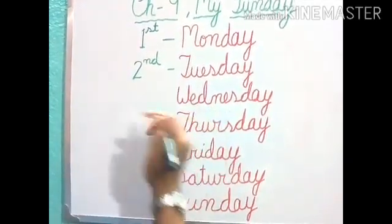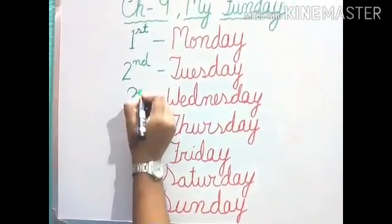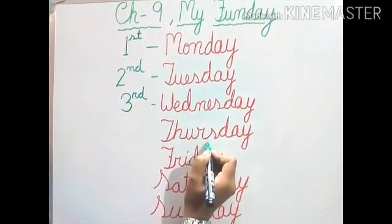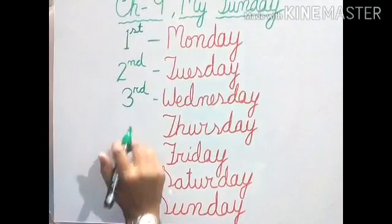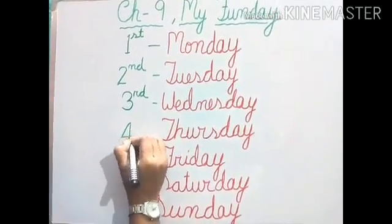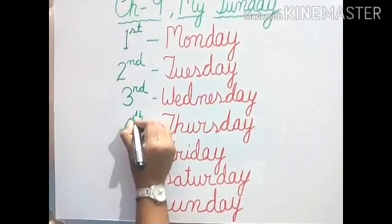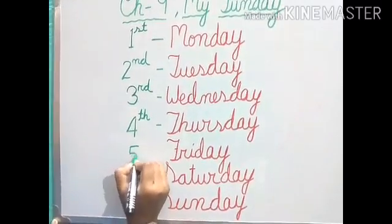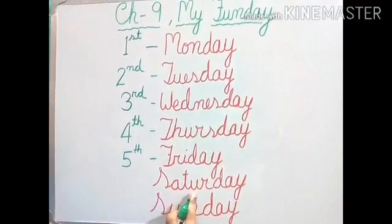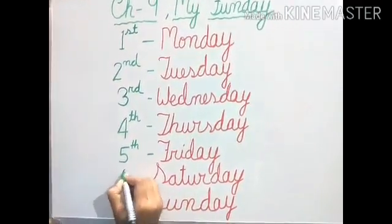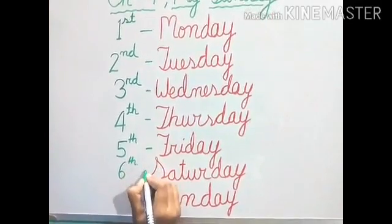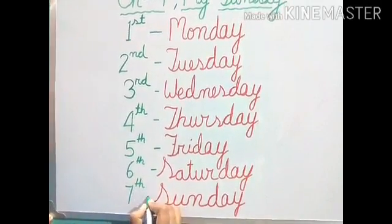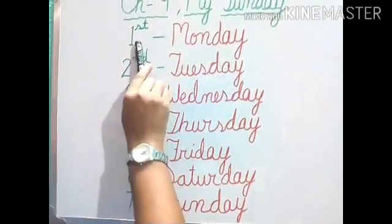Then Wednesday. Wednesday is the third day of the week. Then Thursday — that is after the third day. Which day will come? Fourth day. So Thursday will be the fourth day of the week. And Friday will be the fifth day of the week. And then Saturday — sixth day. And Sunday will be the seventh day of the week.